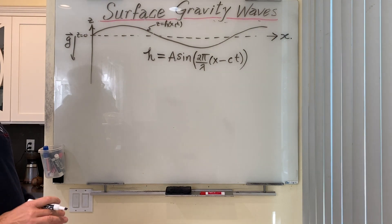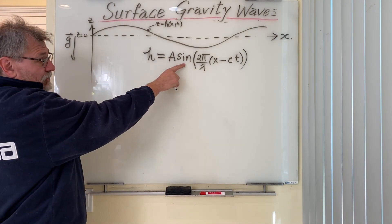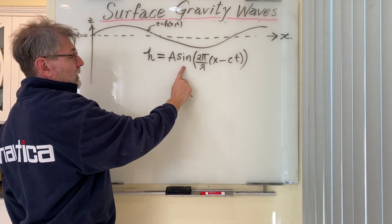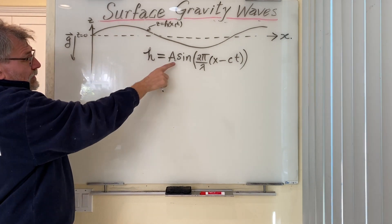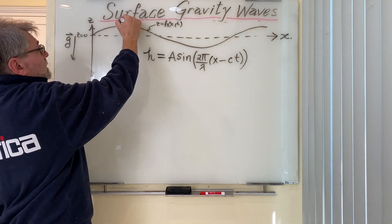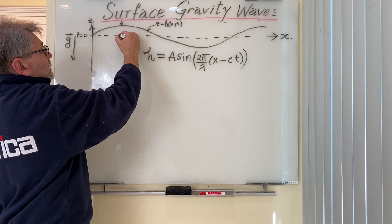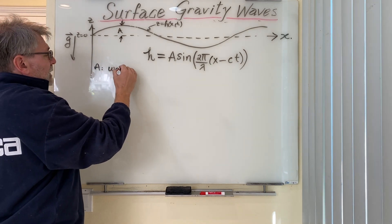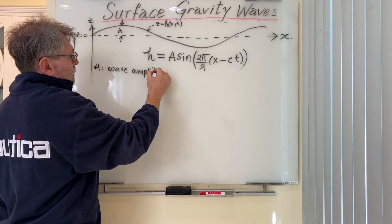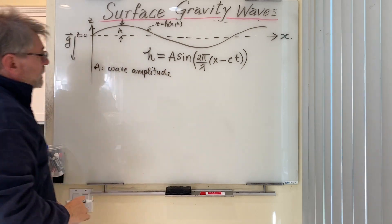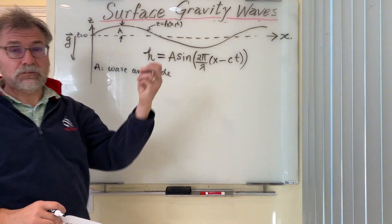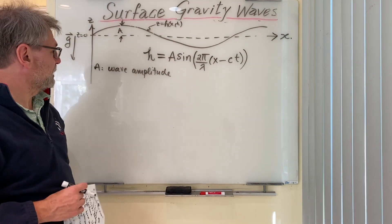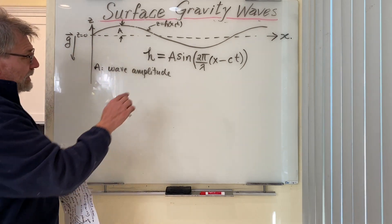The sine function reaches its maximum at π/2 with a value of 1, so at the crest the wave height equals a. This distance a is called the wave amplitude. The height from crest to trough would therefore be twice the amplitude, 2a.